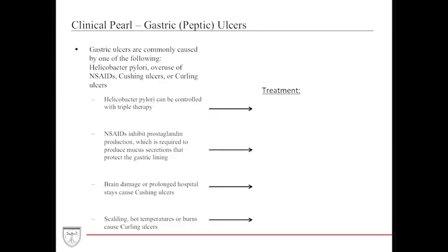Gastric ulcers occur through four common reasons: Helicobacter pylori infection, overuse of NSAIDs, Cushing ulcers, or Curling ulcers. H. pylori predisposes the stomach to gastric ulcers and is treated with triple therapy — proton pump inhibitors, amoxicillin, and macrolides. NSAIDs suppress prostaglandin formation; prostaglandins protect the gastric lining by promoting mucus secretion, so NSAID overuse removes this protection. Stopping NSAIDs is the primary treatment.